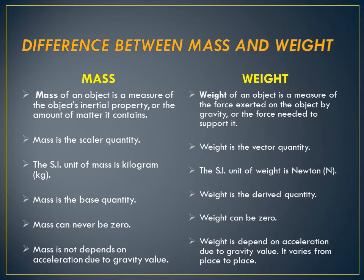The SI unit of mass is kg, but the SI unit of weight is Newton. Next, mass is a base quantity, but weight is a derived quantity because the weight formula is mass into G — that means it depends on mass. So weight is known as a derived quantity.